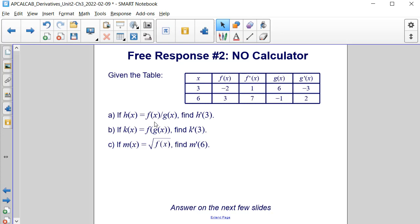If h of x is equal to f of x divided by g of x, find h prime of 3. Then, if k of x is equal to f of g of x, find k prime of 3. And finally, if m of x is equal to the square root of f of x, find m prime of 6.